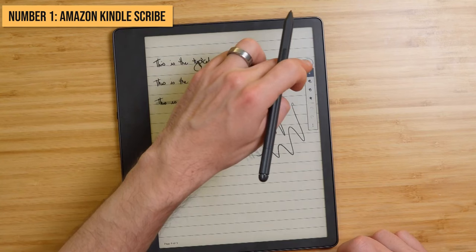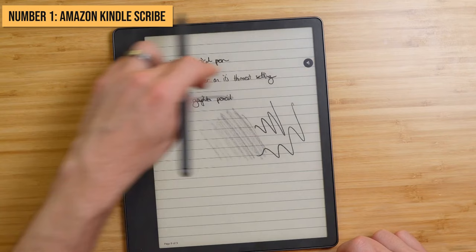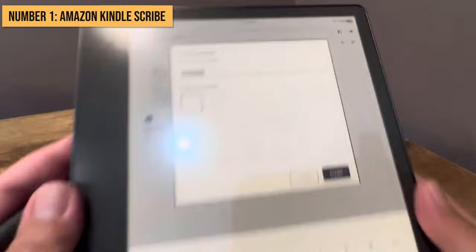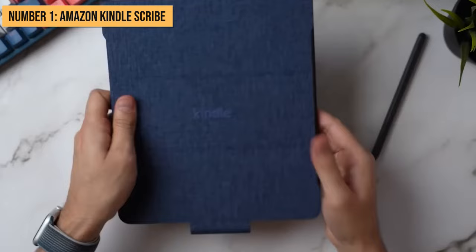Organizing notes is intuitive, with automatically generated notebooks or user-created folders. Search functionality makes finding handwritten notes a breeze. Plus, you can initiate searches right from the Scribe screen via the integrated Alexa voice assistant. Finally, battery life is exceptional, lasting weeks on a single charge even with heavy use spanning note-taking and reading sessions every day.